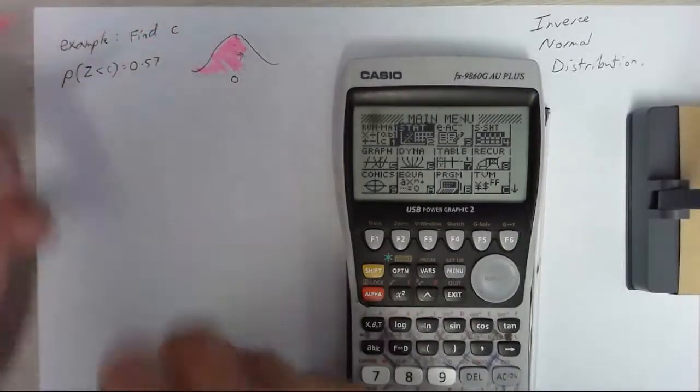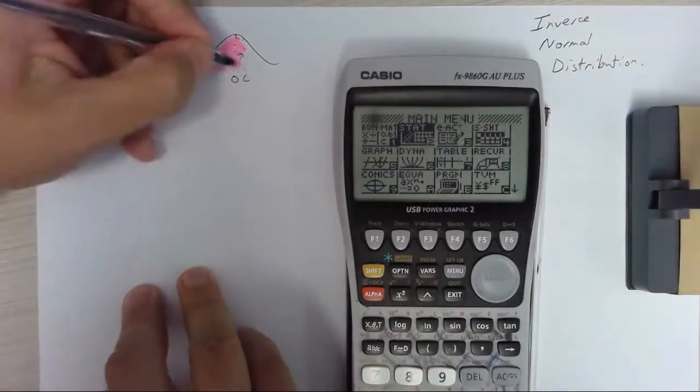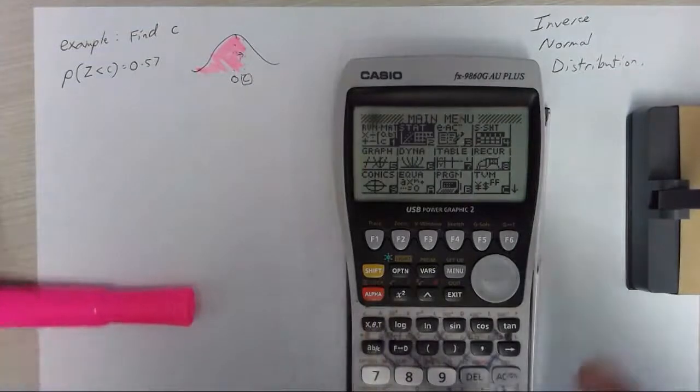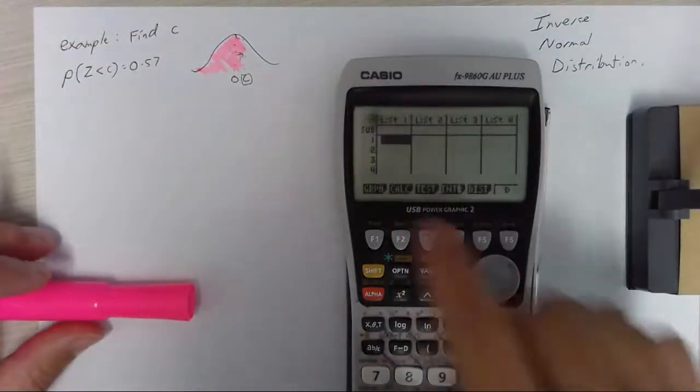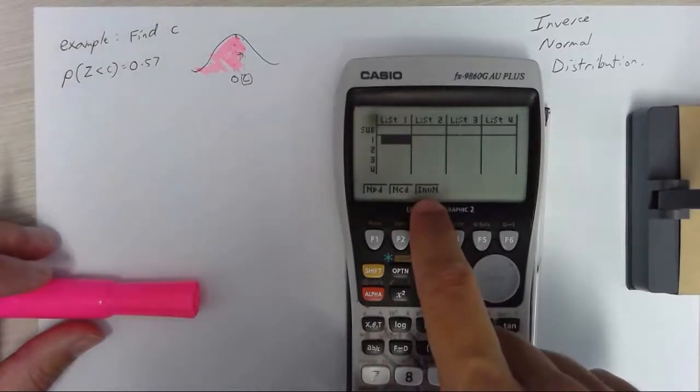What we're trying to find is this value right here, c. All right so let's use stat mode. I'm going to go into distributions, normal distributions and we're going to do the inverse normal distribution.